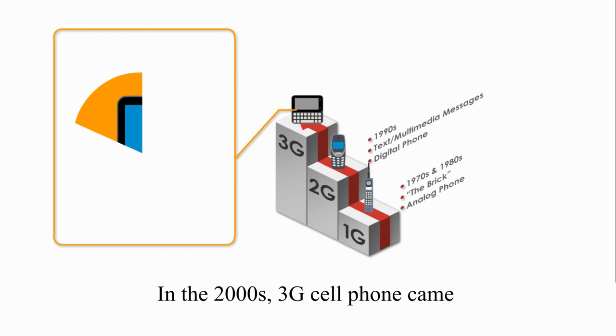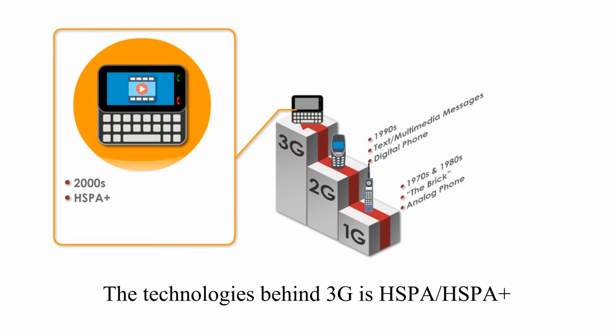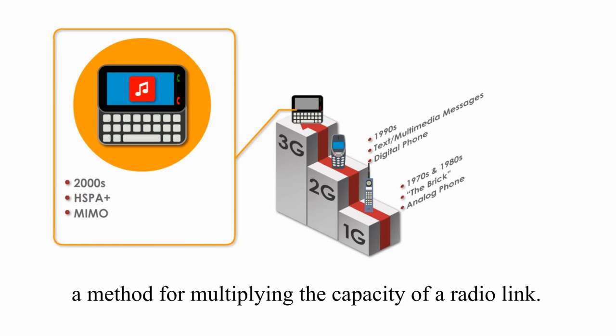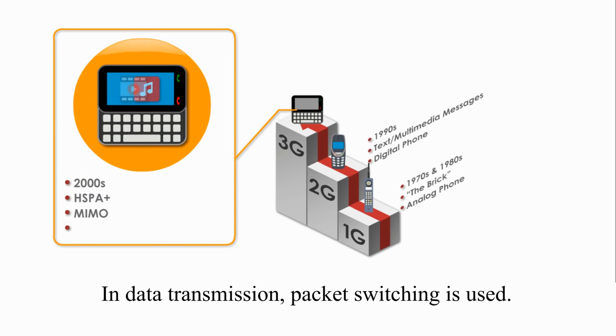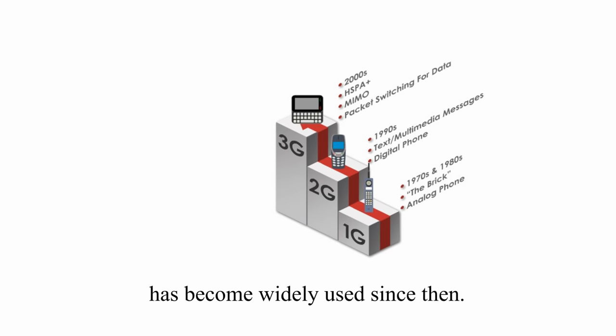In the 2000s, 3G cell phones came with internet browsers. The technologies behind 3G are HSPA or HSPA+. 3G used MIMO, multiple input multiple output, a method for multiplying the capability of radio links. In data transmission, packet switching method is used for 3G. Besides, the generation terminology has become widely used since then.